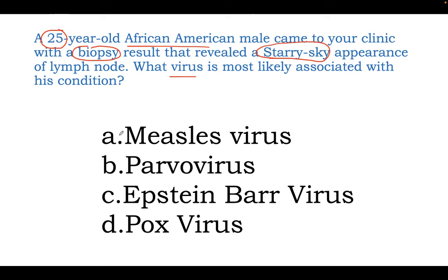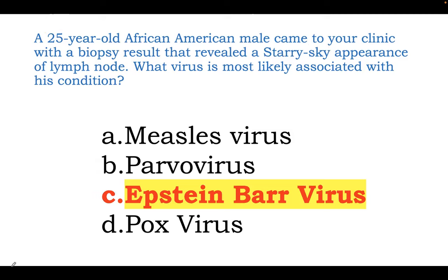You would classically eliminate measles. Look at the age of the patient — 25-year-old. Measles can present with lymphadenopathy, but you do not biopsy that; it classically presents with fever and rash. Parvovirus B19 presents with a slapped-cheek appearance — a different type of rash, no lymphadenopathy, and this is also a childhood disease. Pox virus has been eradicated and is associated with molluscum contagiosum; it would not present with lymphadenopathy. So the correct answer is Epstein-Barr virus.